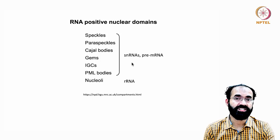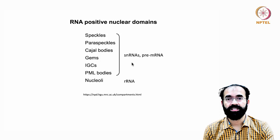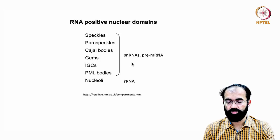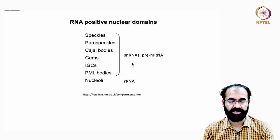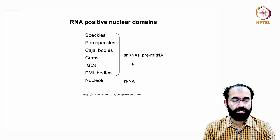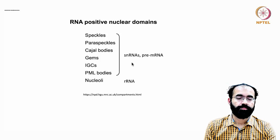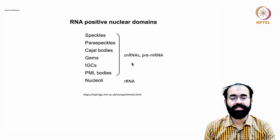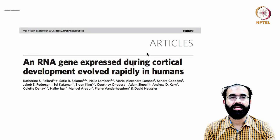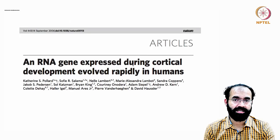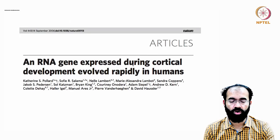Telomerase action depends on this small RNA acting as a template for telomere repeats. Other examples are visible in the form of specific nuclear staining — speckles, paraspeckles, Cajal bodies, gems, IGCs, PML bodies, and the nucleolus where ribosomal RNA synthesis takes place. These areas typically have snRNA and pre-mRNA dominance.